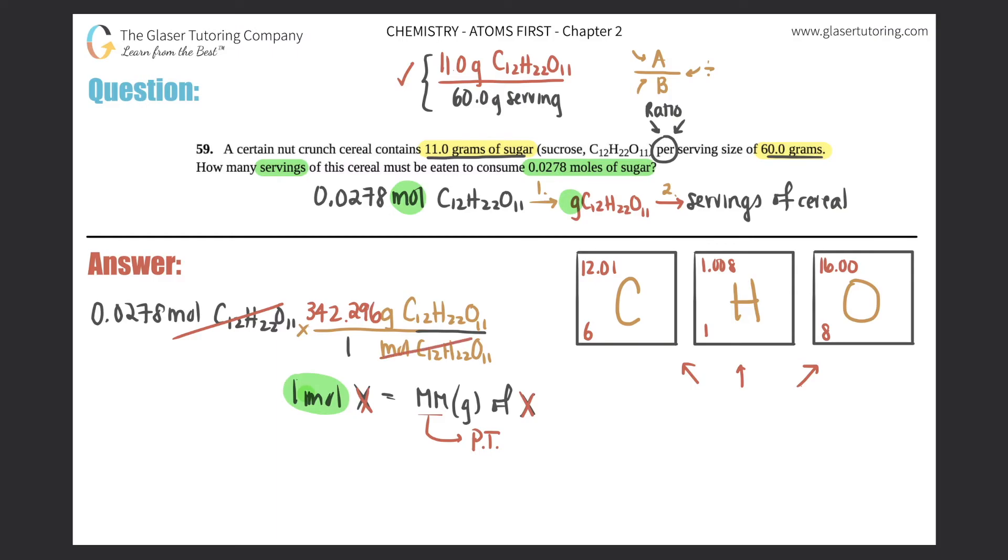And the moles cancel out. Now you don't want grams of the sugar anymore, you want the grams of the serving. So times by another ratio: grams of C12H22O11 go on the bottom, and grams of the serving goes up on the top. That's the information they gave to us above: 11 grams of sugar per a serving size of 60 grams. So 60.0 gram serving for every 11.0 grams of sugar.